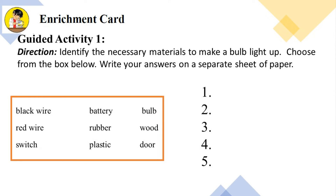Guided Activity 1 — Direction: Identify the necessary materials to make a bulb light up. Choose from the box below and write your answers on a separate sheet of paper. Choices: black wire, battery, bulb, red wire, rubber, wood, switch, plastic, door.